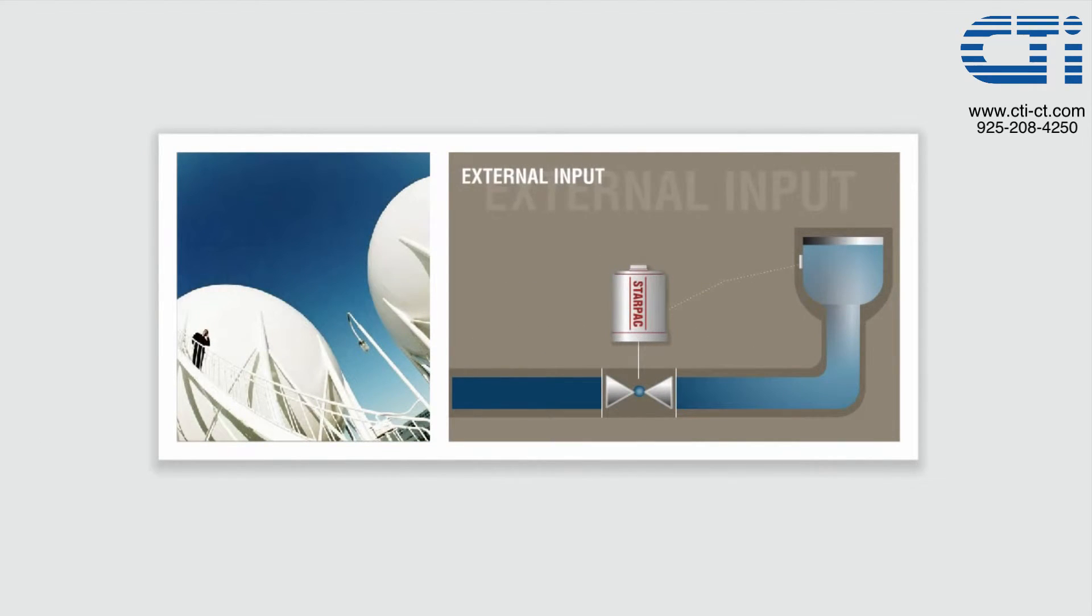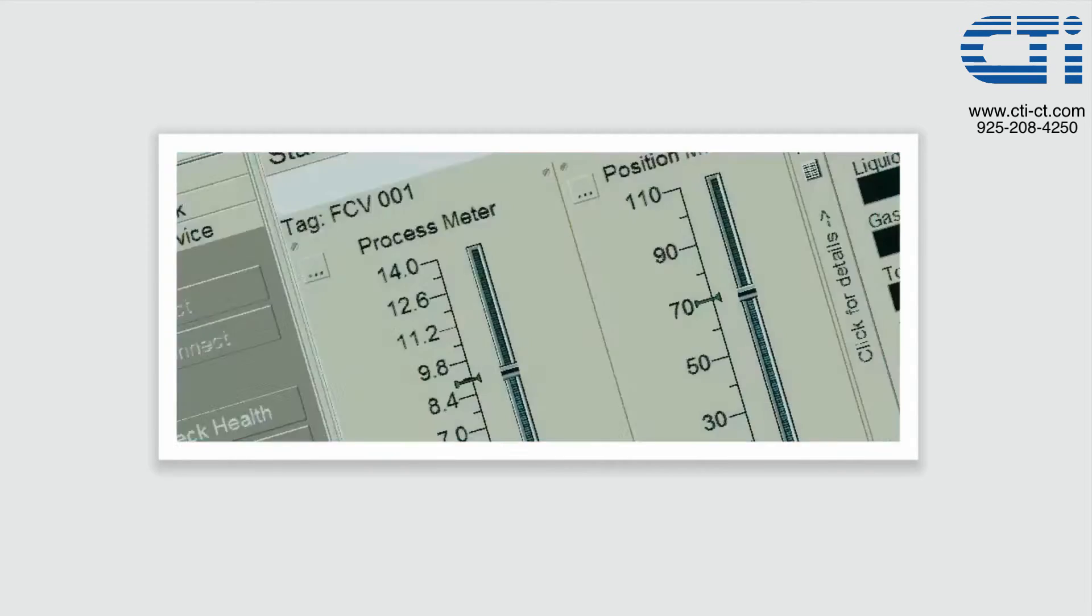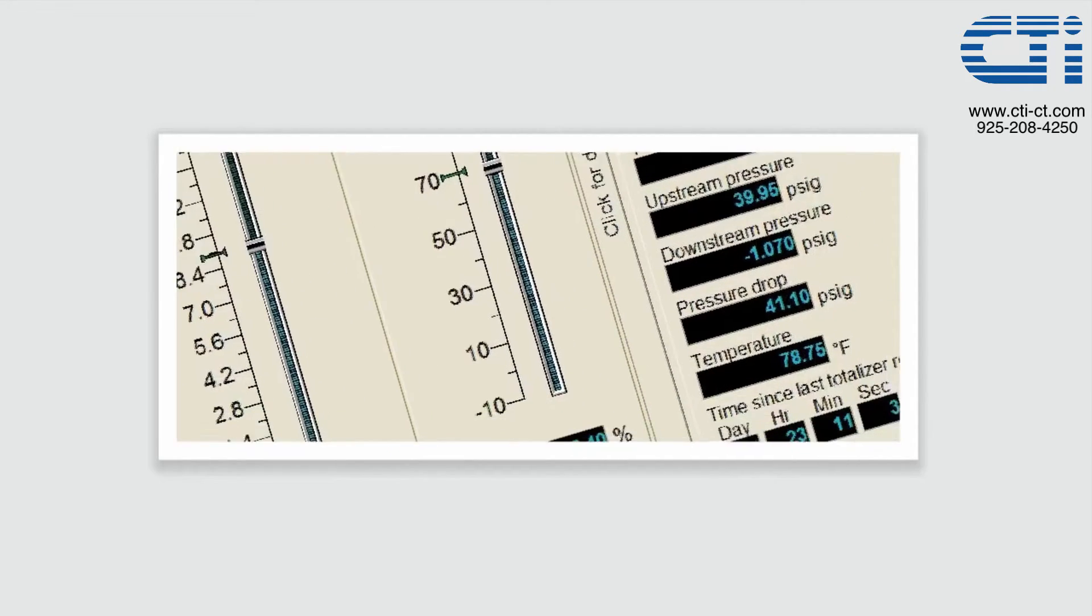Also, the StarPak may use an external input as the control variable. For example, a tank level signal can be fed into StarPak and used as the process variable to maintain a constant level. The StarPak also has a flow totalizer which can be reset when desired.